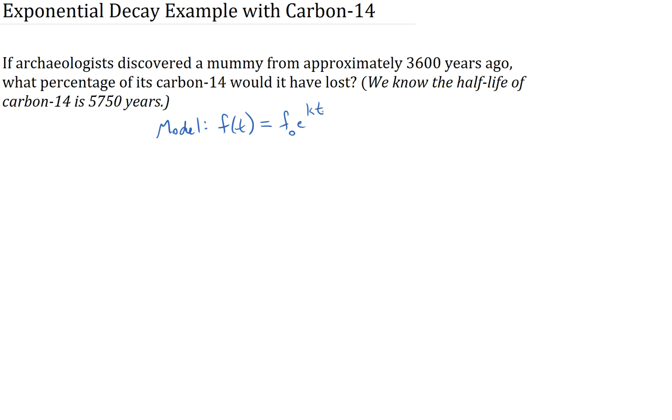Now, in this particular problem, if we look at a graph of it, it might look something like this. We want to measure the amount of Carbon-14 in this mummy. At certain time intervals, we'll measure time in years. For example, we want to measure the amount of Carbon-14 3,600 years after it was found. And we also want to know at its half-life, 5,750 years, something to do with the amount of Carbon-14.